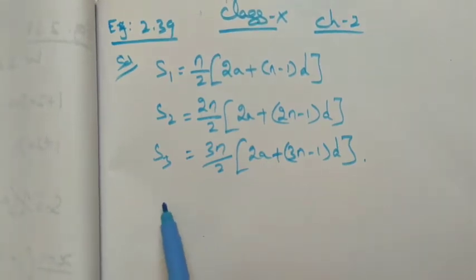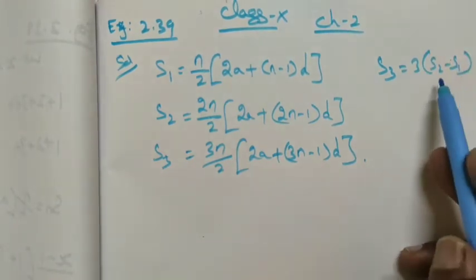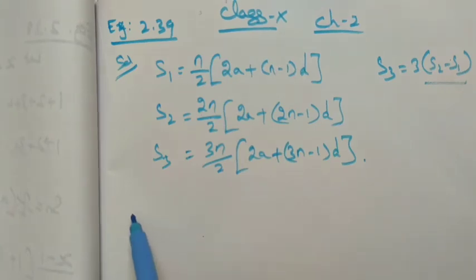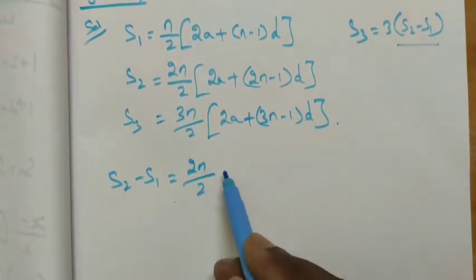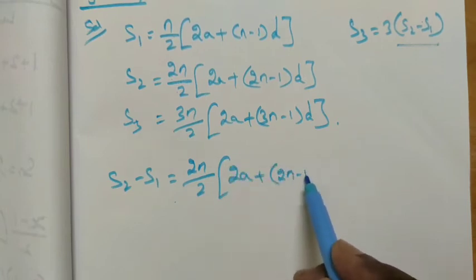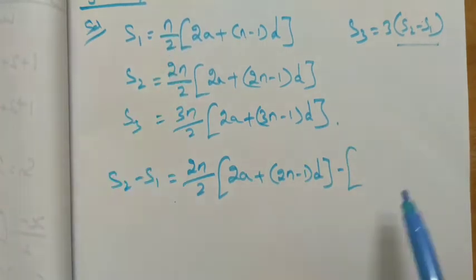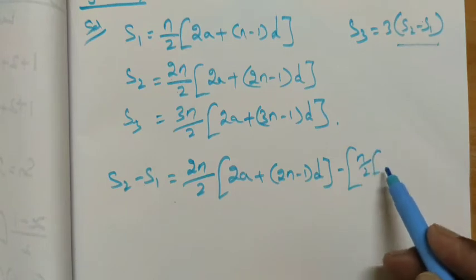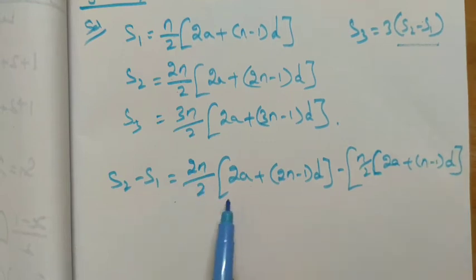S₃ = S₂ - S₁. Proof: S₂ - S₁ = n/2[2a + (2n-1)d] minus n/2[2a + (n-1)d]. Now cancel, multiply n/2.